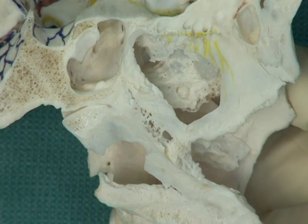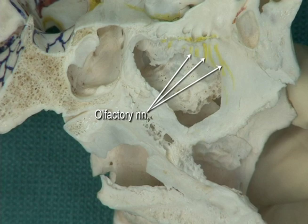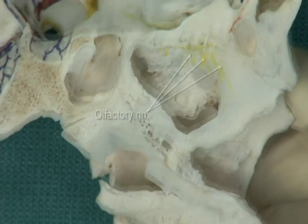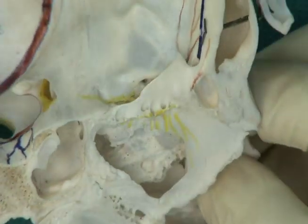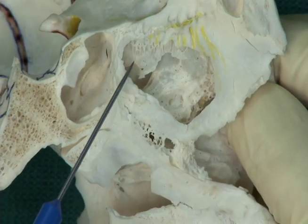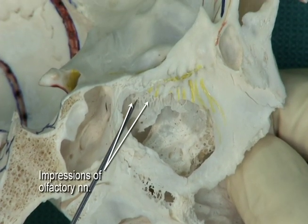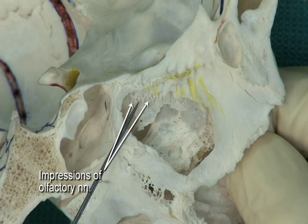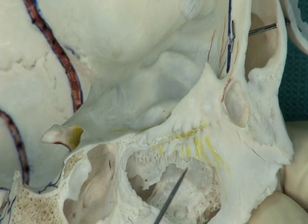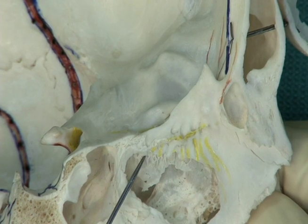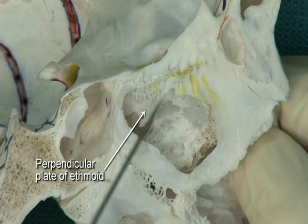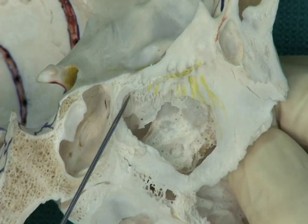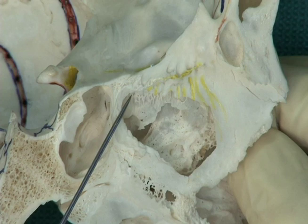The olfactory nerves, some of which are shown here in yellow, enter the cranial cavity through the cribriform plate of the ethmoid bone. There are many fine nerve fibers. The impression of these nerves can often be seen deep to the cribriform plate on the part of the septum formed by the perpendicular plate of the ethmoid. Note that the area where these nerves are found is small, about the size of a penny.